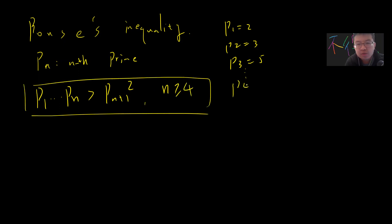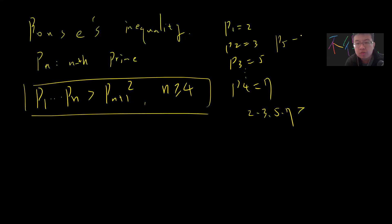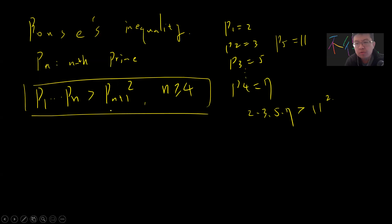For example, p_4 is 7, so you check: 2 times 3 times 5 times 7 is greater than p_5 squared, which is 11 squared. You can verify this holds.